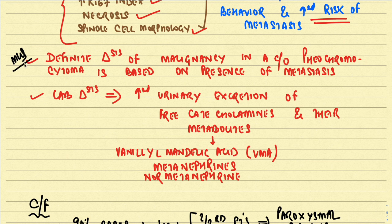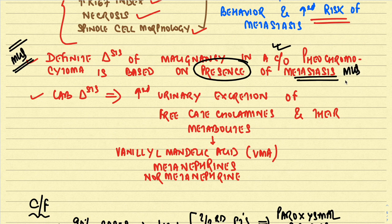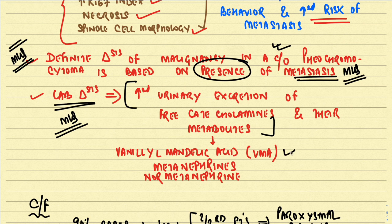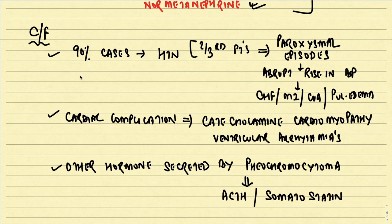The definitive diagnosis of malignancy in pheochromocytoma is based on the presence of metastasis — a very important exam question. The lab diagnosis is confirmed by increased urinary excretion of free catecholamines and their metabolites, especially VMA (vanillylmandelic acid), metanephrines, and normetanephrines. Demonstration of elevated catecholamines — epinephrine and norepinephrine — along with these metabolites in urine is diagnostic of pheochromocytoma.